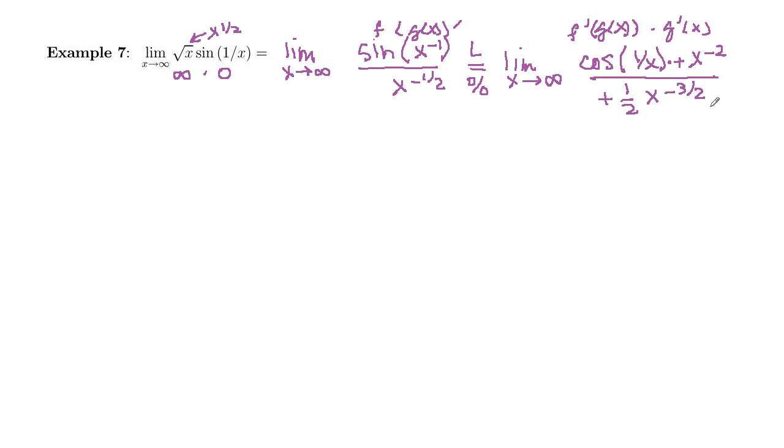So the two negatives will make a positive. Let's go ahead and bring the negative 3 halves power up as a positive 3 halves. So this would be limit x goes to infinity, and we've got cosine 1 over x on top. And then in the denominator, we have 1 half, and we've got x to the negative 3 halves times x squared. And when you multiply, you add exponents.